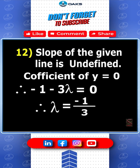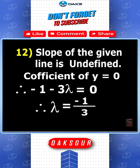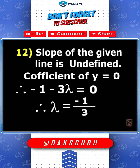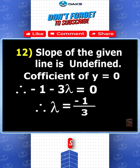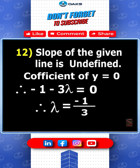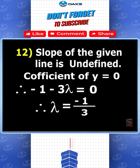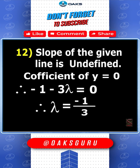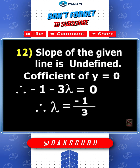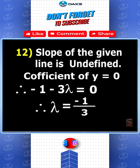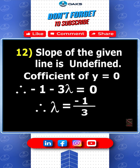The key point is: when a line is parallel to the y-axis, the coefficient of y is 0. So we need to find the coefficient of y, which is minus 1 minus 3 lambda. Therefore, minus 1 minus 3 lambda equals 0, giving lambda equals minus 1 by 3.